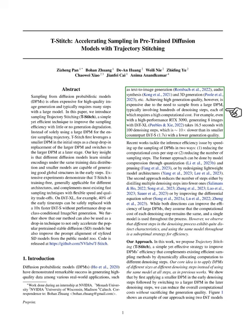However, achieving this high level of quality comes at a cost. Specifically, it requires sampling from a large DPM, which involves hundreds of steps where each step is computationally expensive. To put this into perspective, using a top-tier RTX 3090 graphics card to generate 8 images with a model called DIT-XL takes about 16.5 seconds, even with 100 denoising steps.